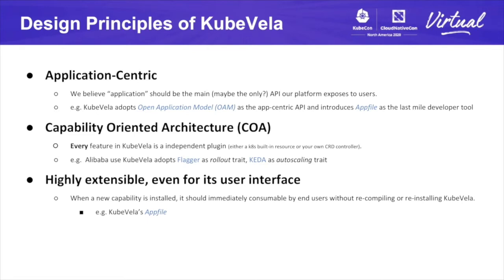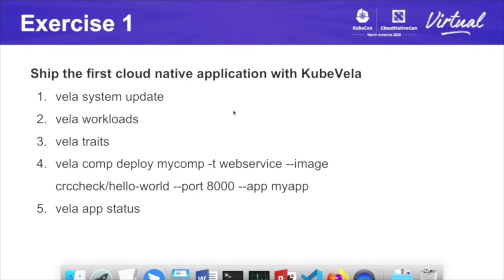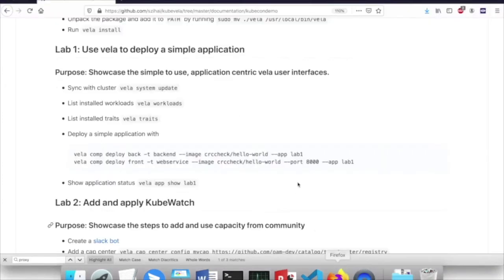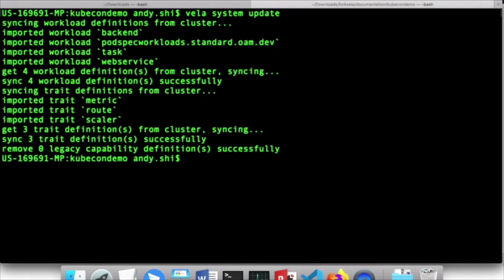In today's lab we're going to see all three principles. The first is Lab 1 — we're going to test the command line of KubeVela and see how it gives us an application-centric user experience. The second is to add a new feature or capacity to our existing Vila system. The third is to go through the details of AppFile and use AppFile to install a fairly complicated cloud-native application. Let's start Exercise 1: Ship the first cloud-native application with KubeVela. In this exercise, we mainly need to get used to the Vila commands and see how application is treated as a first-class citizen. Let's go to the instructions — first, we'll do a `vela system update`.